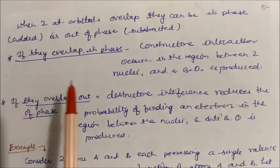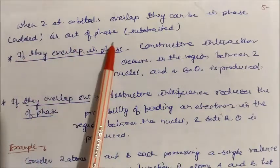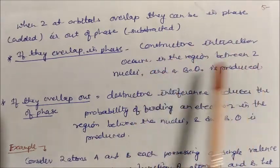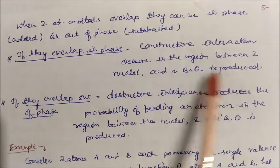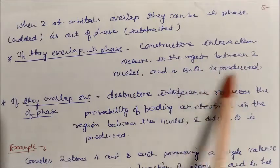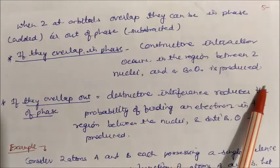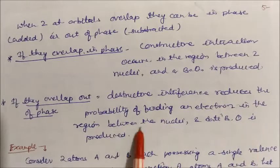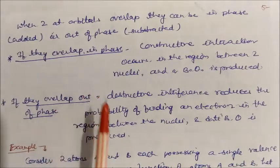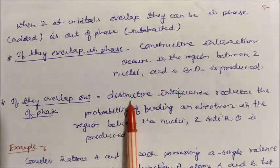When two atomic orbitals overlap in phase — waves added — constructive interaction occurs in the region between the two nuclei, and a bonding orbital is produced. If the overlap is out of phase, destructive interference occurs, reducing the probability of finding an electron in the region between the nuclei, and an anti-bonding orbital is produced. So, two types of orbitals — bonding and anti-bonding — are produced due to constructive and destructive interference.